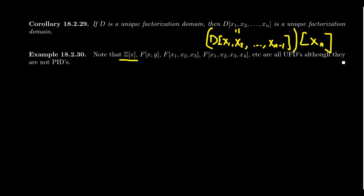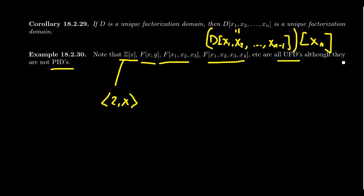This includes Z adjoin X, a field adjoin X and Y, a field adjoin three variables, or a field adjoin four variables — all are unique factorization domains. However, they're not necessarily principal ideal domains. For example, Z adjoin X has the ideal generated by 2 and X, which is not a principal ideal, so Z[X] is not a principal ideal domain. Likewise, F adjoin X and Y has the ideal generated by X and Y, which is not principal. These are good examples of UFDs that are not PIDs.